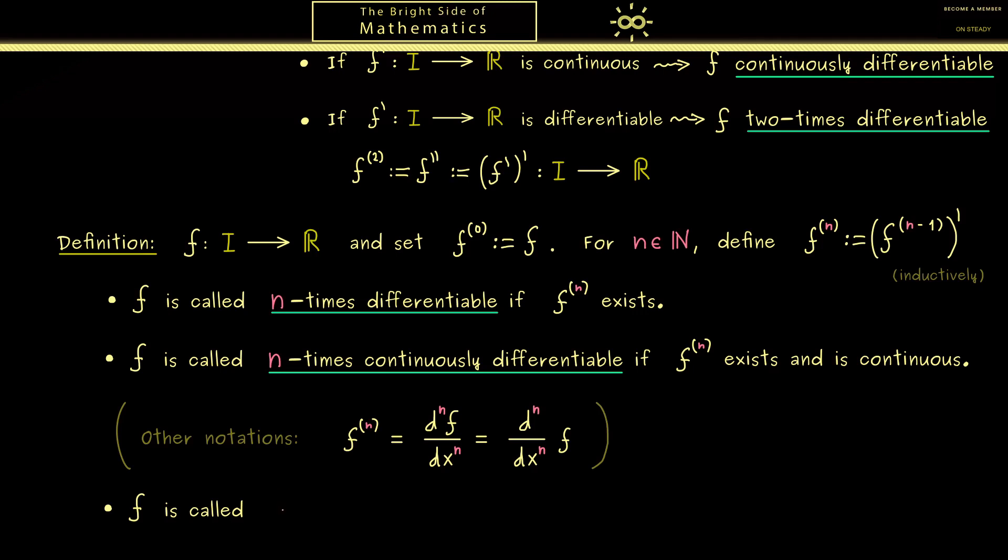Namely you often see the term that a function is infinitely many times differentiable. However more precisely one better should say arbitrarily often differentiable. Simply because we want that the nth derivative exists no matter which n we choose. In this case we see immediately that all the derivatives also need to be continuous. Hence here the function is continuously differentiable as many times as you want.